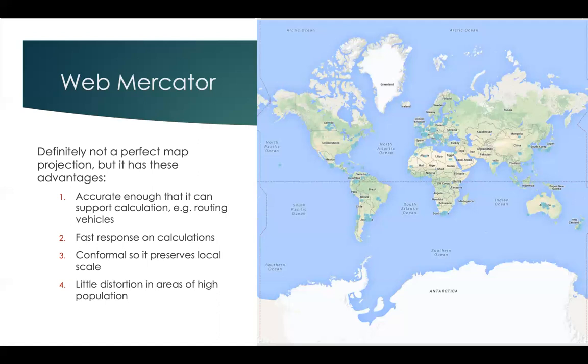And finally, it only has a little distortion in areas of high population. Places that are really distorted in this map are places at the far reaches of far high latitudes. So places like Greenland, Northern Canada, Northern Russia, and Antarctica are pretty distorted. But places like the mid-latitudes, where a lot of us live, are not very distorted.